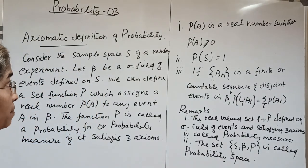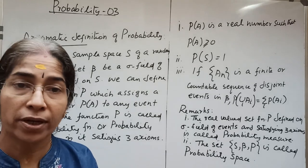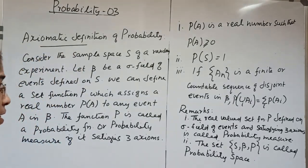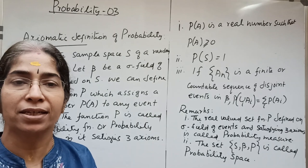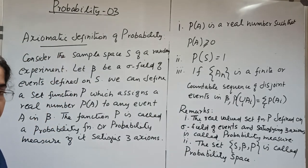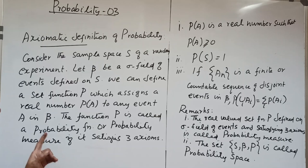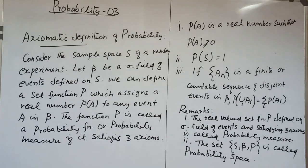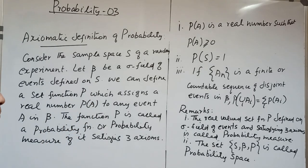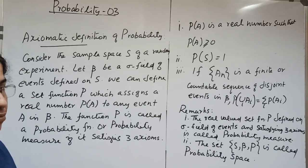Now we come to the axiomatic definition of probability — the modern approach — which includes both the classical and statistical definitions. According to certain axioms, we define probability for any event A. We consider the sample space S of a random experiment, and let beta be a sigma field of events defined on S.